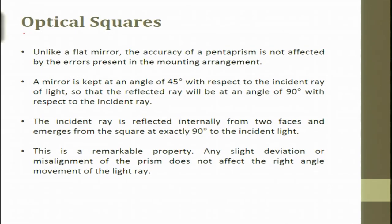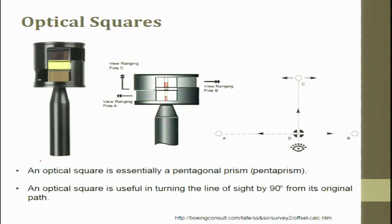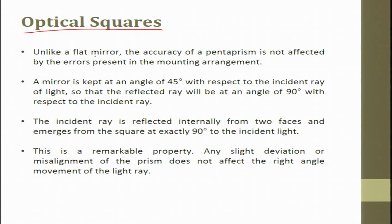Next is the optical square, which is essentially a pentaprism. Unlike a flat mirror, the accuracy of a pentaprism is not affected by errors present in the mounting arrangement. With a flat mirror kept at an angle of 45 degrees with respect to the incident ray, any mounting error also gets magnified in the measurement.